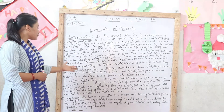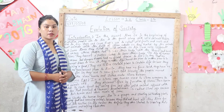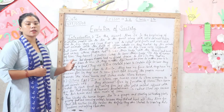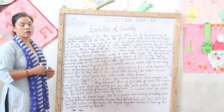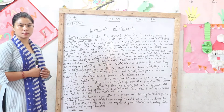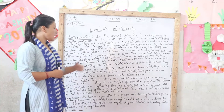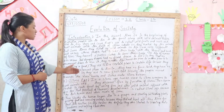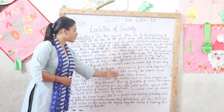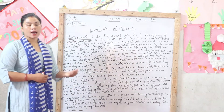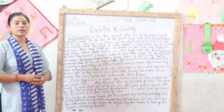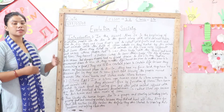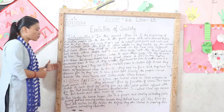Since fire was not yet discovered, people used to eat raw flesh of animals. But slowly, people moved towards river banks and began making stone tools. They entered what we call the Stone Age. Today I am discussing only about the Stone Age.